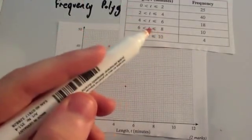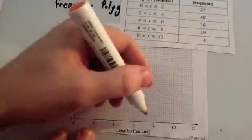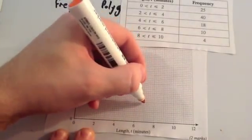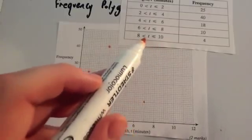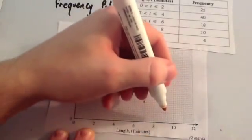6 to 8, the midpoint's 7 and frequency is 10. So 7 across, 10 up. And finally, 8 to 10, so the midpoint's 9 and frequency is 4. So 9 across and 4 up.